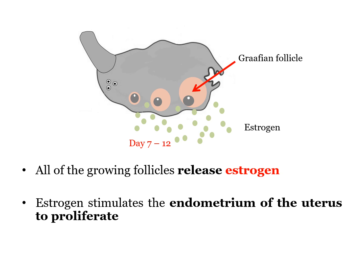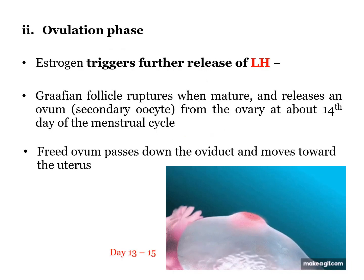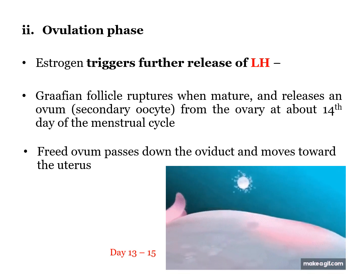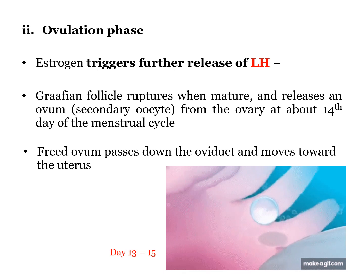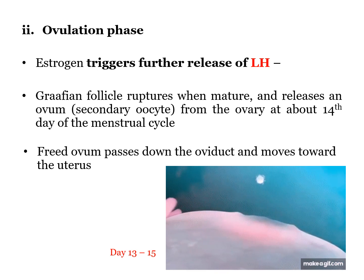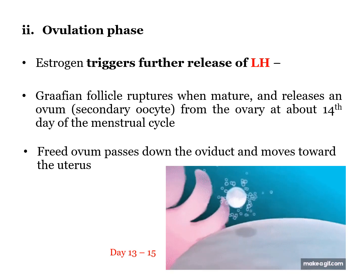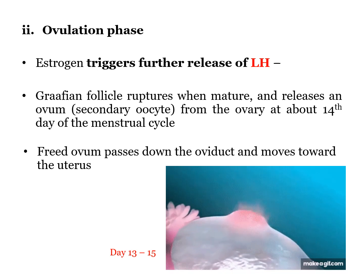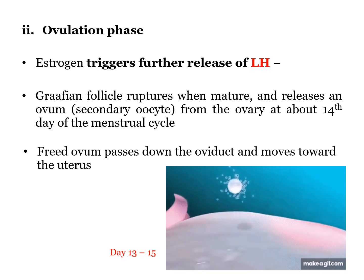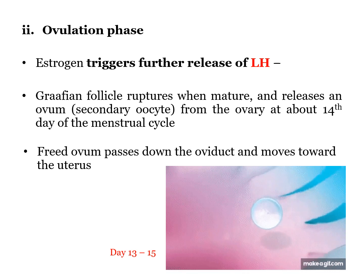In the meantime, the follicles continue to grow, and one will become larger and is known as the Graafian follicle. On day 13 to 15, the estrogen will trigger further release of LH. LH will weaken the ovarian wall, and as the Graafian follicle ruptures, the secondary oocyte is released from the ovary and passes down to the fallopian tube. This is known as the ovulation phase.